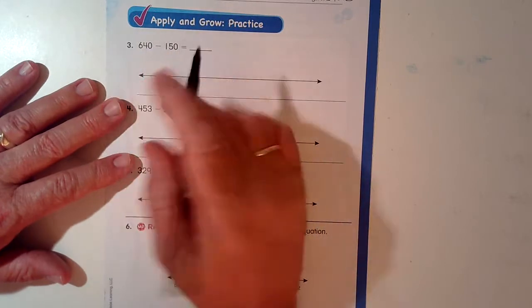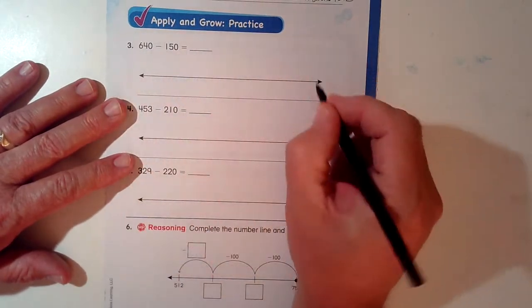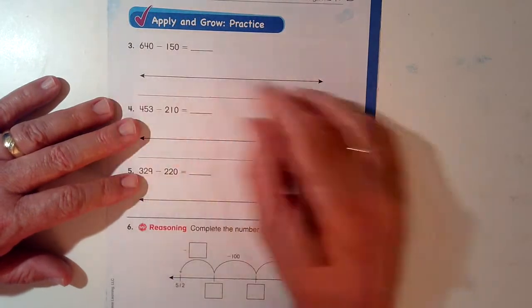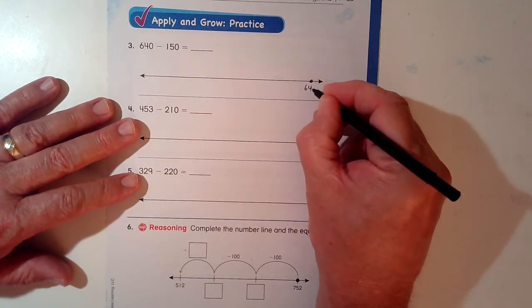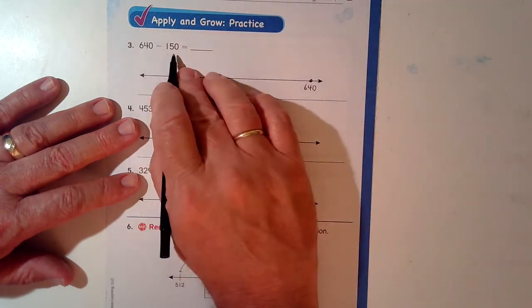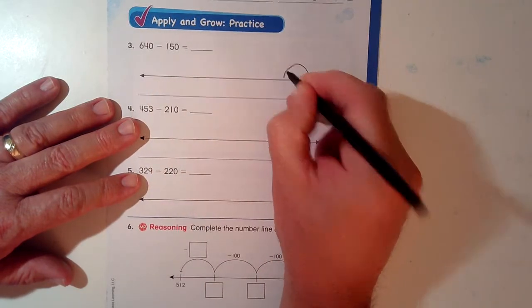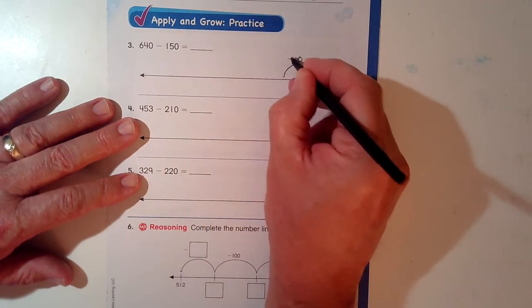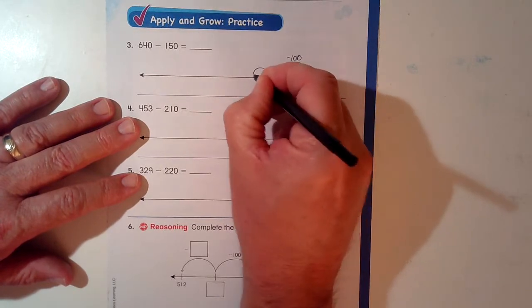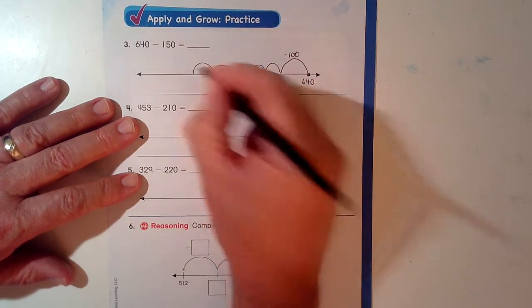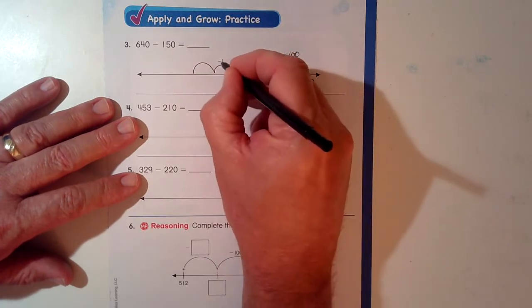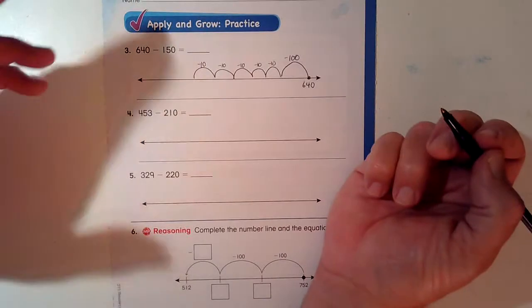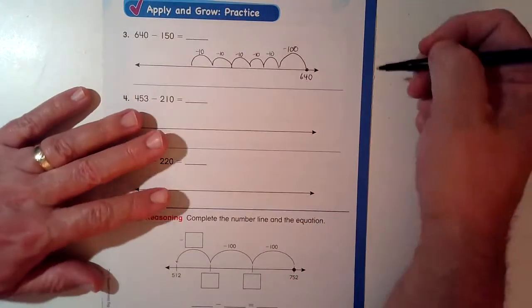640 minus 150. And it's an open number line. When it's a subtraction problem, I start over here. 640, 150. So I take away 100, and 10, 20, 30, 40, 50. Minus 10 for all of these. Okay, this is one way of solving these problems.